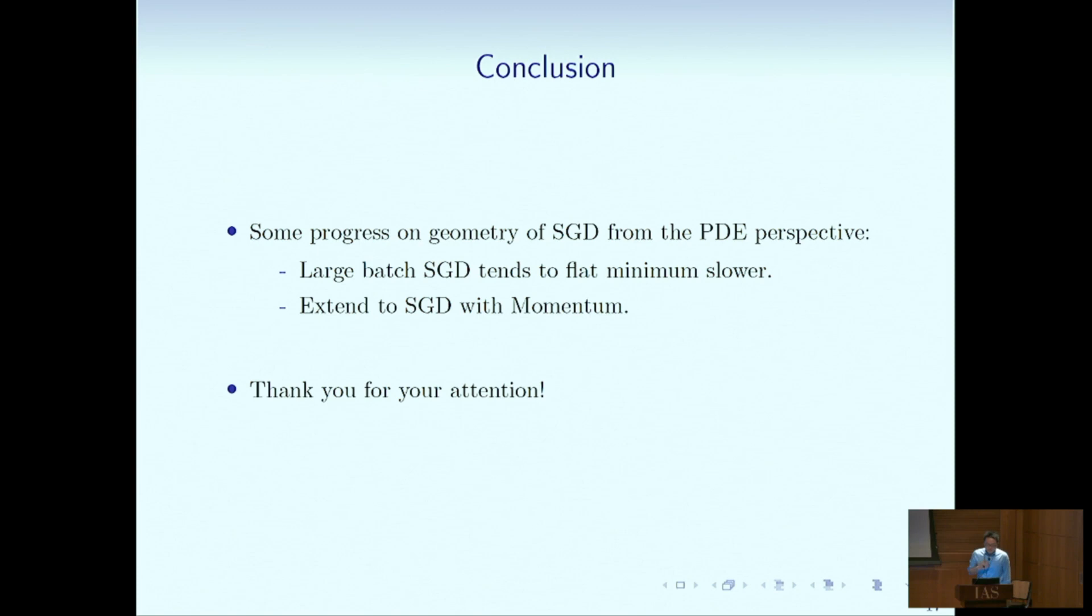To sum up, the result here basically shows from the PDE point of view. You can see that larger batch not only kind of stuck at a sharp minimum, it kind of converged to flat minimum slower compared to small batch. That's our talk. Thank you.